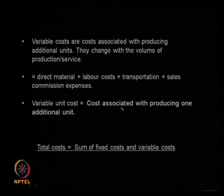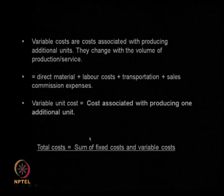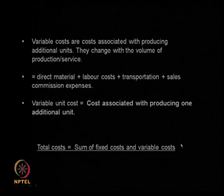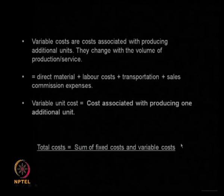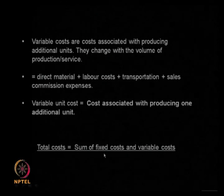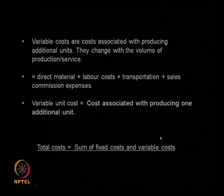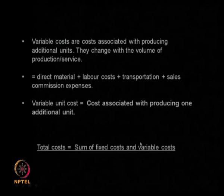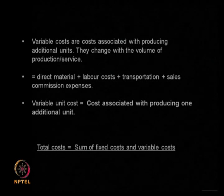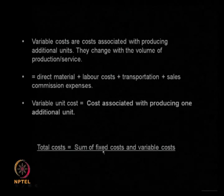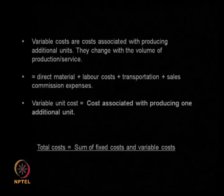Variable cost is the cost associated with producing one additional unit. So the total cost is the sum of fixed cost and variable cost. Whether I make any product today or not, fixed cost is always expenses I will be incurring. And if I make a product, I will be spending on raw materials, electricity, manpower, transportation, and sales commission - that will be the variable cost. So total cost is a combination of these two items.